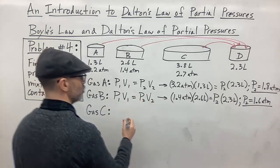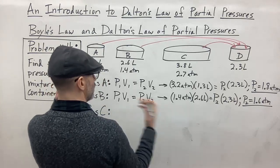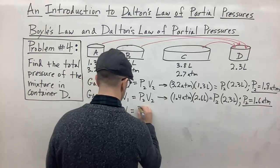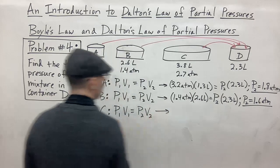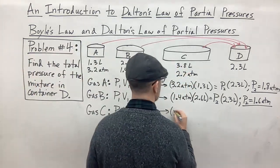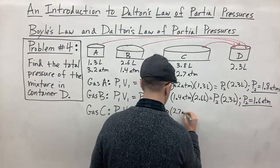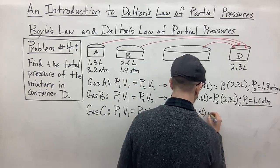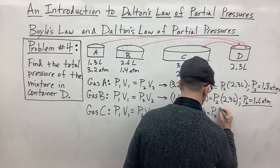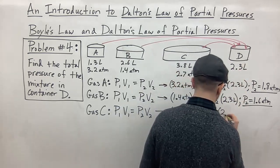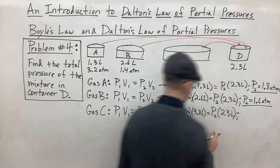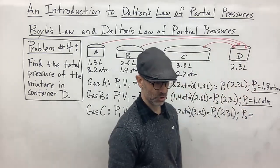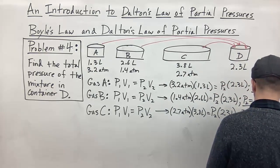Finally for gas C, using Boyle's Law to find the new partial pressure in container D: P1V1 = P2V2, so 2.7 atmospheres × 3.8 liters = P2 × 2.3 liters. Solving for P2, we get 4.5 atmospheres.